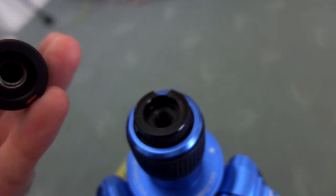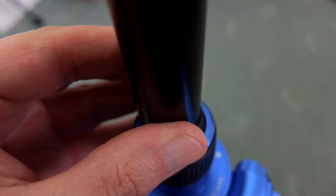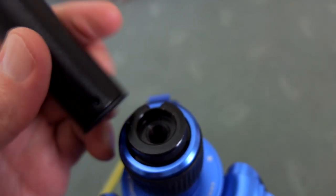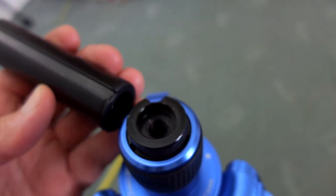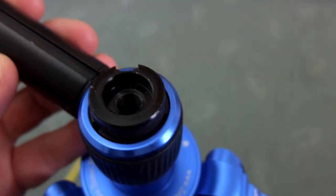You can pretty much disassemble the entire tripod. Here I could fit the short extension column and replace the standard column with that.